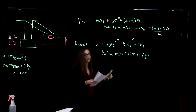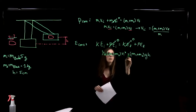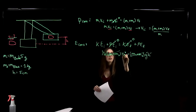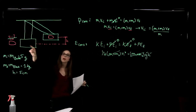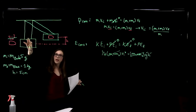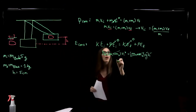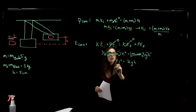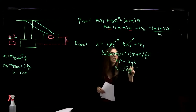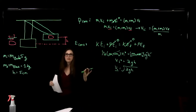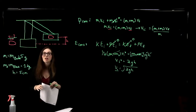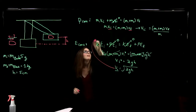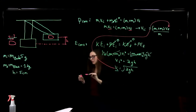Both sides have M1 plus M2, so we can divide both sides by that quantity. We know the height and g, so we can solve for V_initial. We get V_initial squared equals 2gh, so V_initial equals the square root of 2gh. This initial velocity is the velocity the block-plus-bullet have after the collision — it's the same as V_final from our conservation of momentum equation.